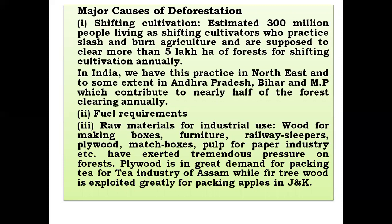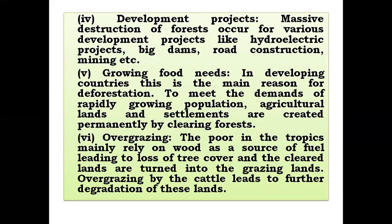For industrial uses, various raw materials are required — wood for making boxes, furniture, plywood, matchboxes, and pulp for the paper industry. These have exerted tremendous pressure on forests. Plywood is in great demand, for example for packing tea in the Assam industry. These are major causes of deforestation.